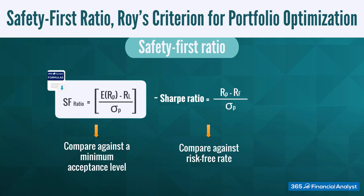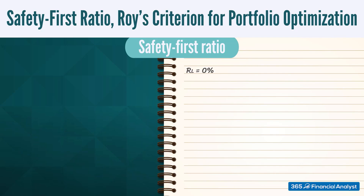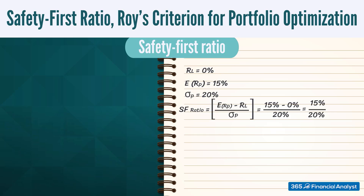Let's calculate the safety first ratio in practice. This is a situation when our R sub L, the threshold level return, is 0%. A portfolio's historical average return is 15%, and it has a standard deviation of 20%. The safety first ratio is equal to 15% minus 0% divided by 20%, which gives us 0.75.